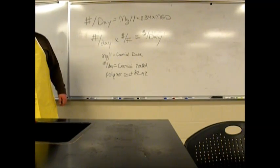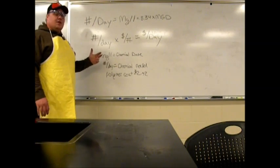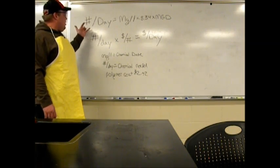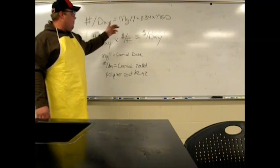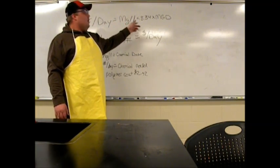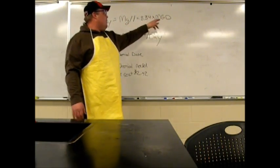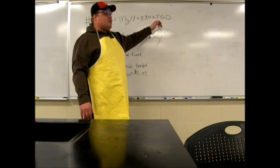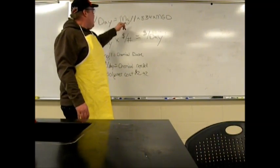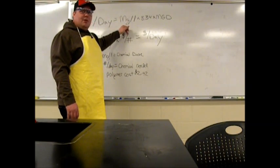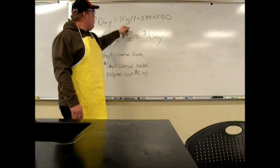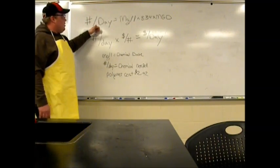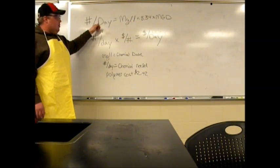Here are a couple of formulas that we use to figure out how much polymer you will need on a large scale. You have to figure out your pounds needed per day — you take your milligrams per liter, multiply by 8.34, and then by your million gallons per day. So you figure out how much water is coming through your facility, take your optimal amount of polymer or other coagulant, multiply them all together, and that will give you your pounds needed per day of total polymer.